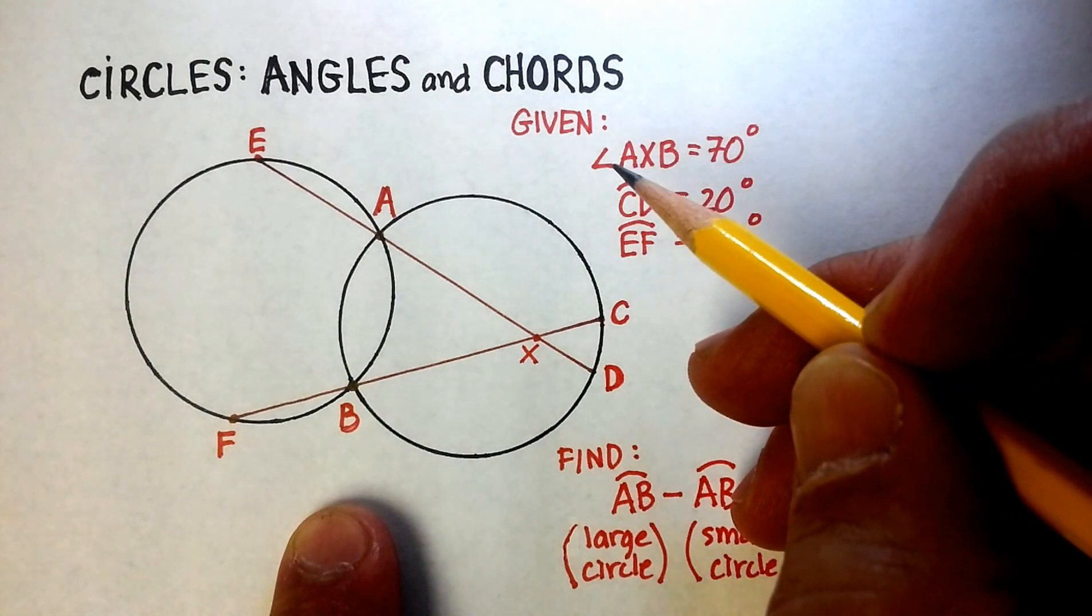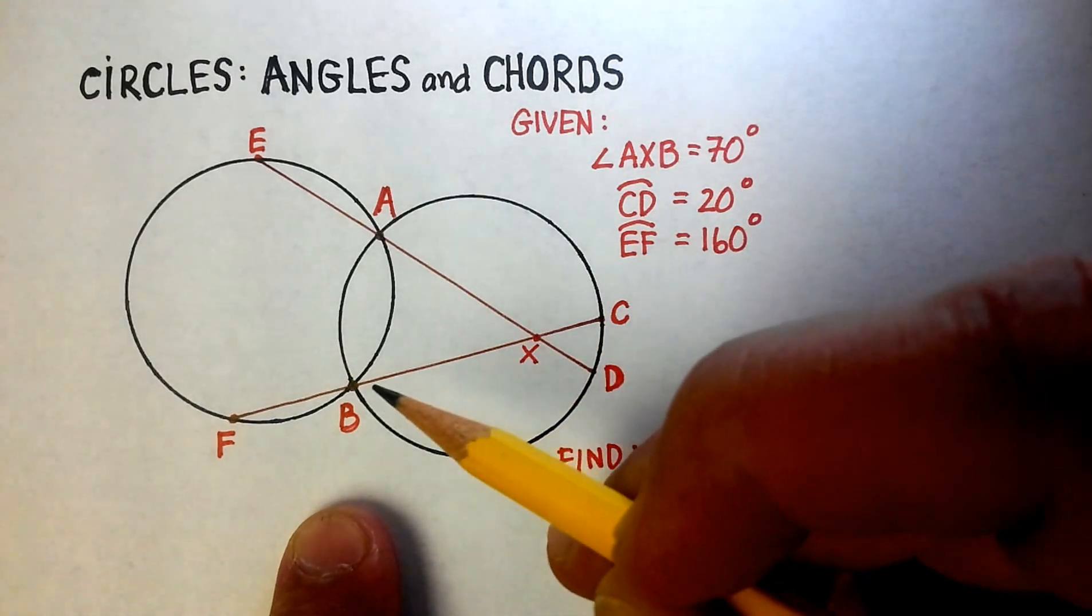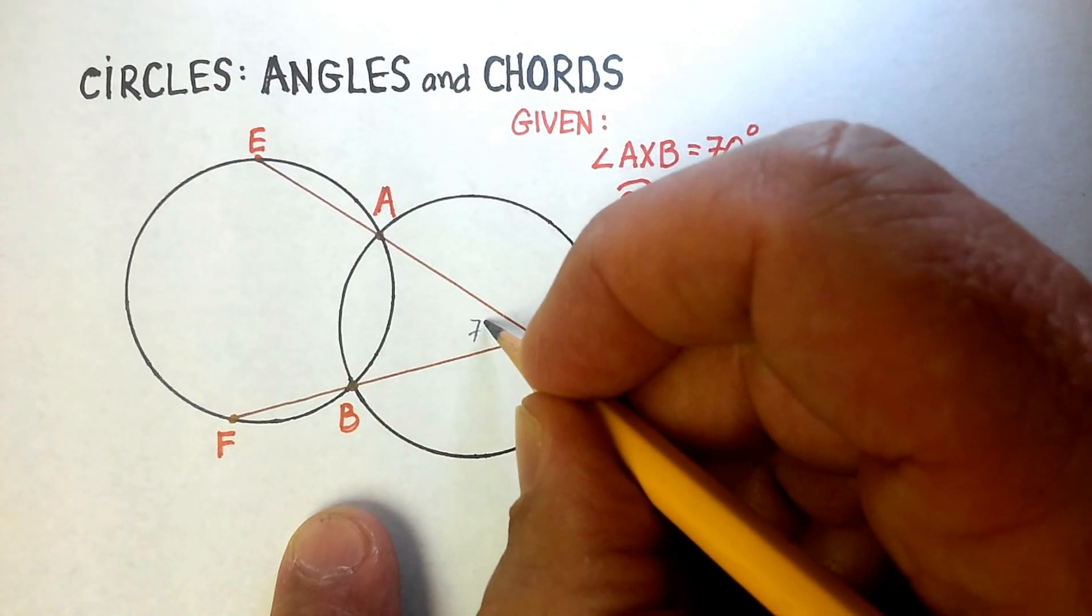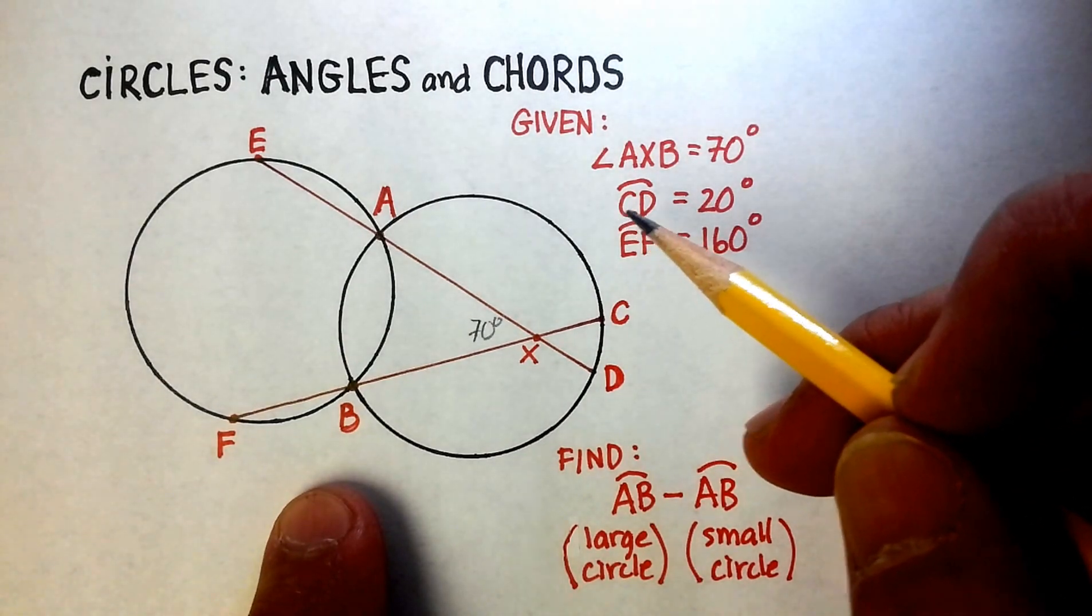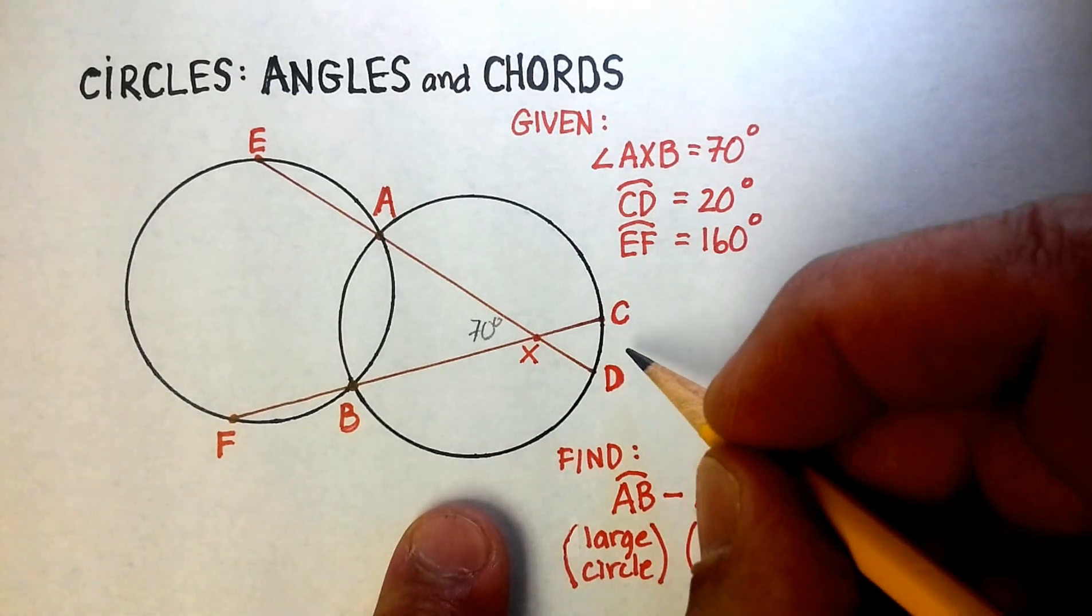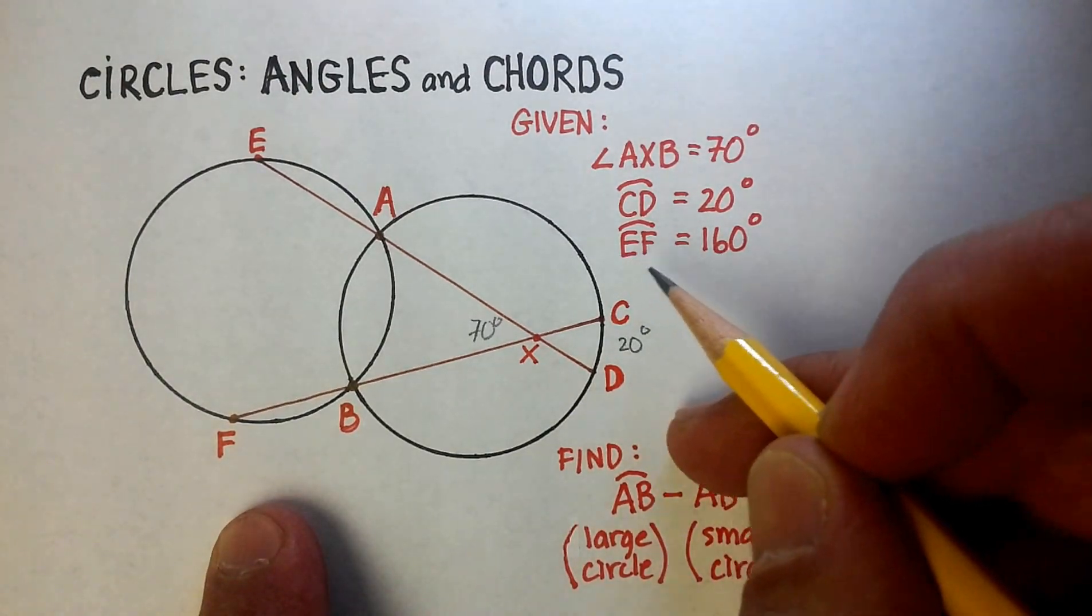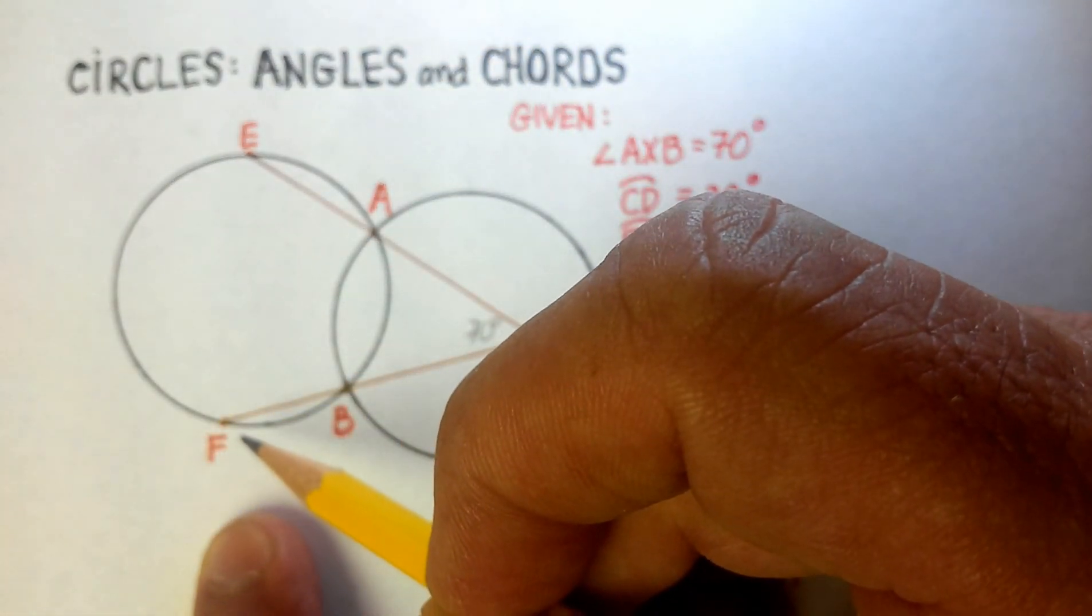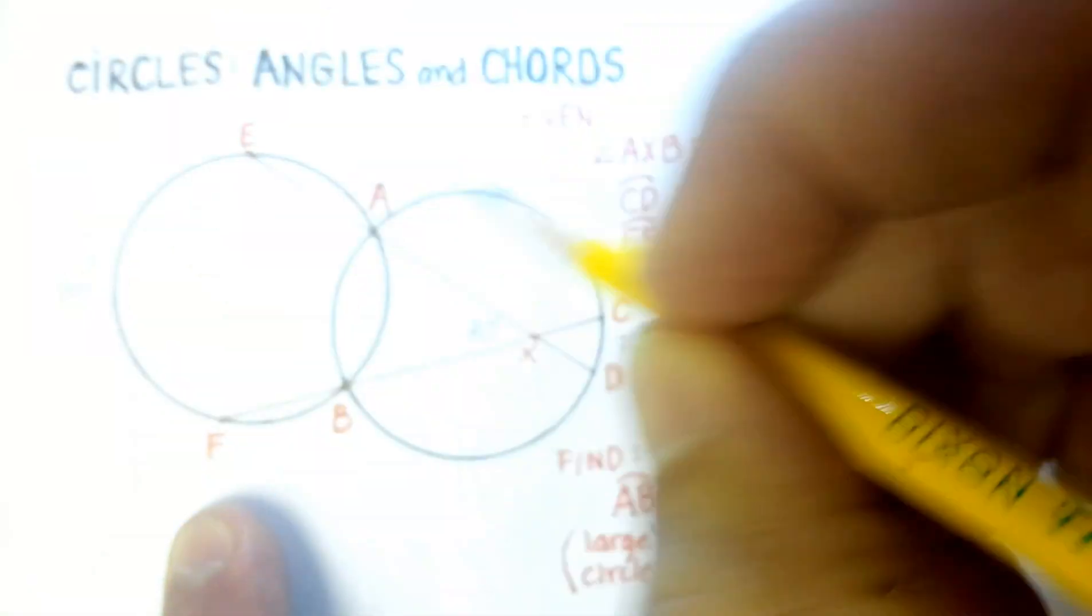Now we know that angle AXB, this angle is 70 degrees. So let's put that in there. We also know that the arc CD, which is this one right here, this arc is equal to 20 degrees. So let's put that in there as well. We also know that this larger arc, EF, is equal to 160 degrees. So let's put that in there. So those are all given.